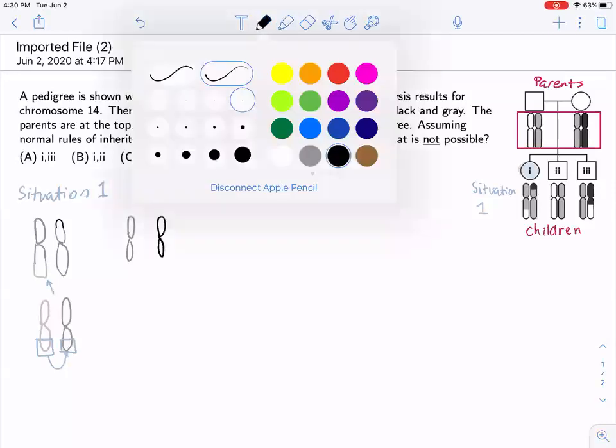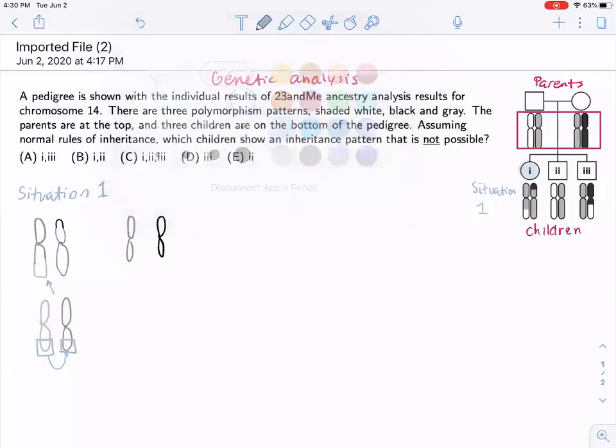Okay, and so similarly, we can think about how I can easily swap out these two top halves for each other, and then I end up with that chromosome over there. So situation one, or at least child one, adds up for us.